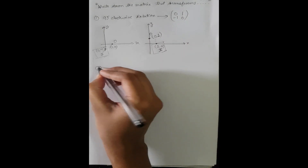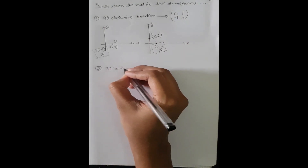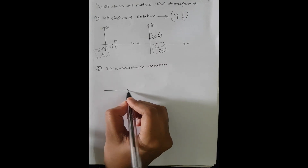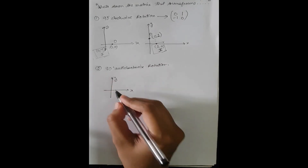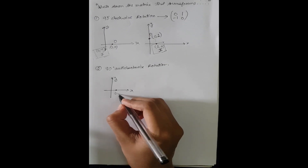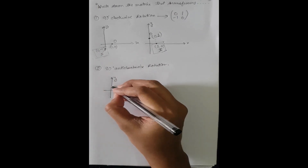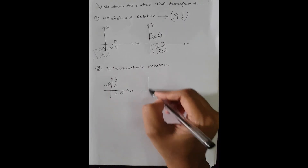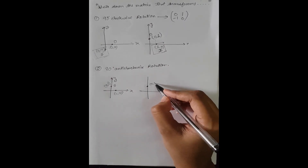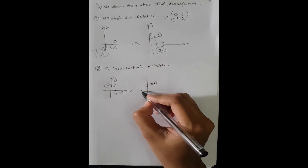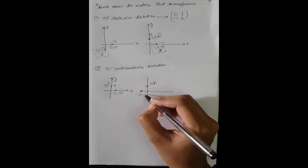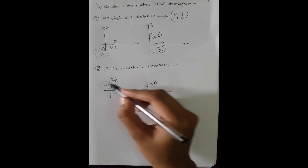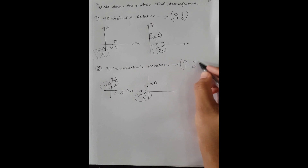We will follow the same procedure for 90 degree anti-clockwise rotation. The unit coordinate on the x-axis is (1, 0). After rotating 90 degrees anti-clockwise, the image will be at (0, 1). Similarly, the unit coordinate on the y-axis is (0, 1). After rotating 90 degrees anti-clockwise, we find another point at (-1, 0). So the matrix will be [0, 1; -1, 0].